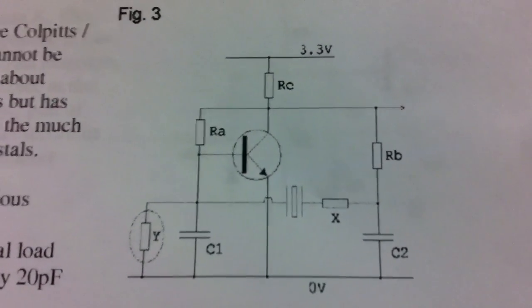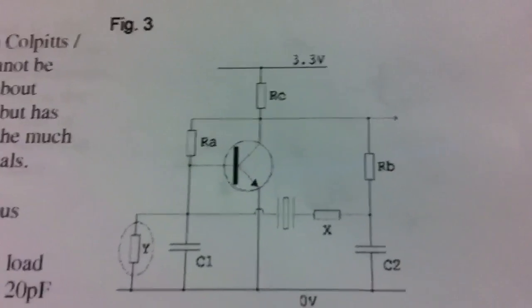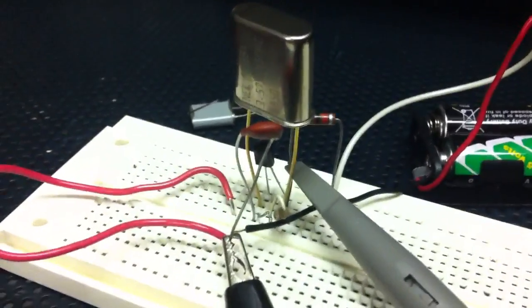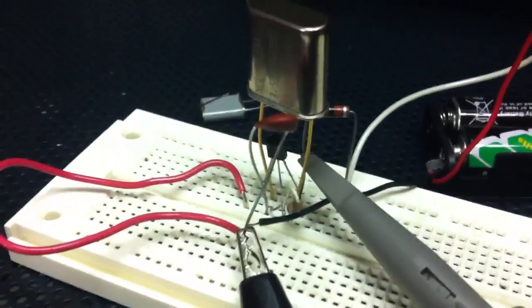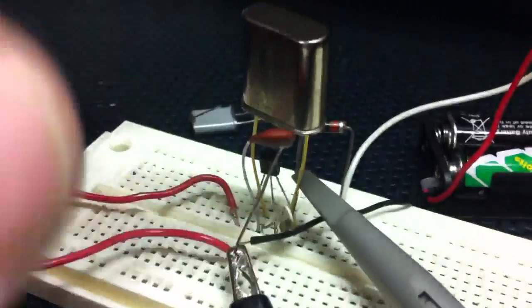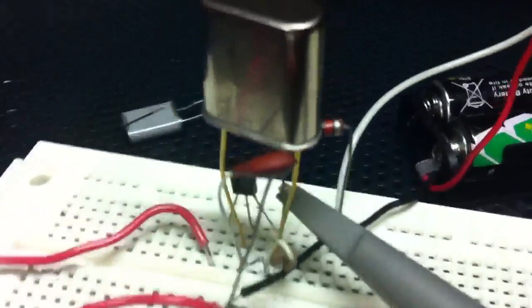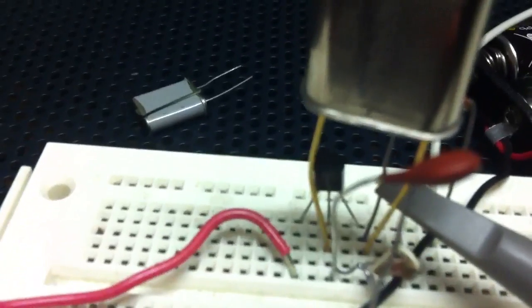I figured that I had enough parts lying around from other projects to just throw it together on a breadboard here. Took a little time to get it to finally oscillate but I succeeded. I've got a 3.58 color crystal here and a 2N2222 NPN transistor.